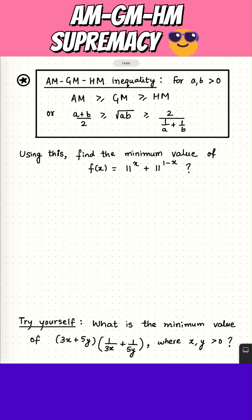So using this, let's find this minimum value. Since 11 to the power X and 11 to the power 1 minus X, they are always positive.